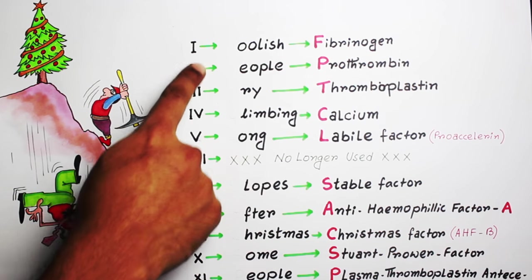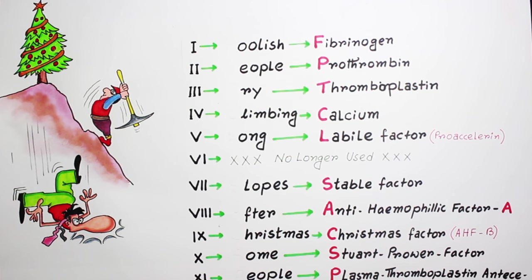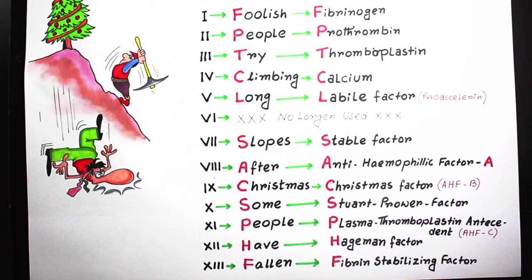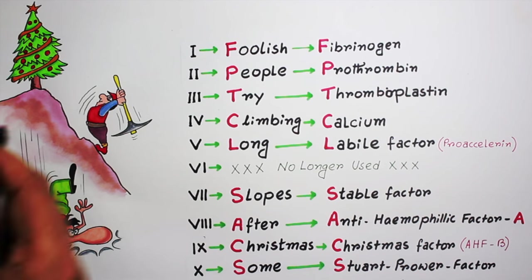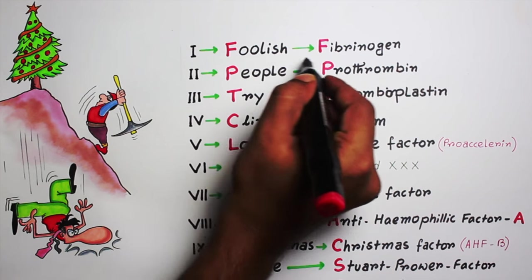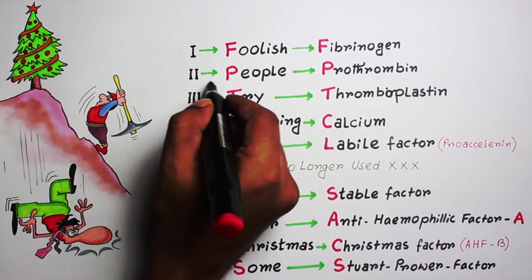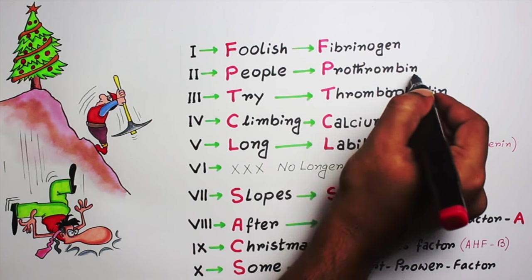You have to remember one simple sentence: 'Foolish people try climbing long slopes after Christmas, some people have fallen.' That's it! Now, factor 1 — F for fibrinogen; factor 2 — P for prothrombin; factor 3 — T for thromboplastin.